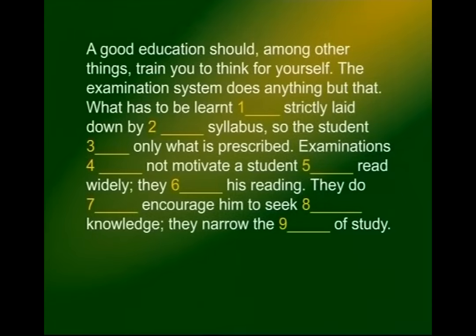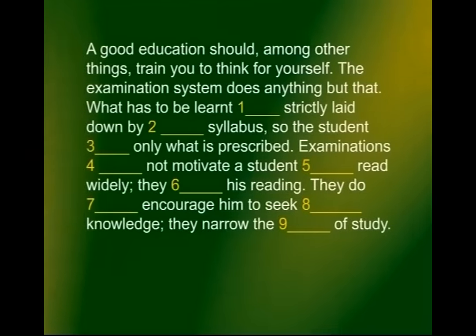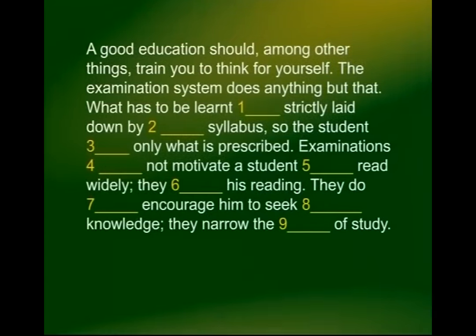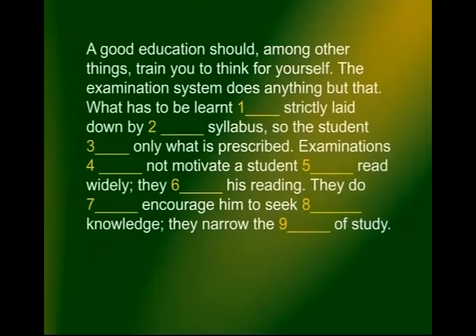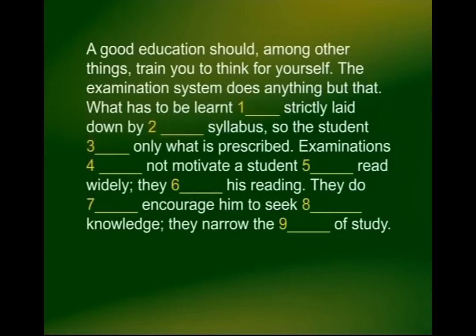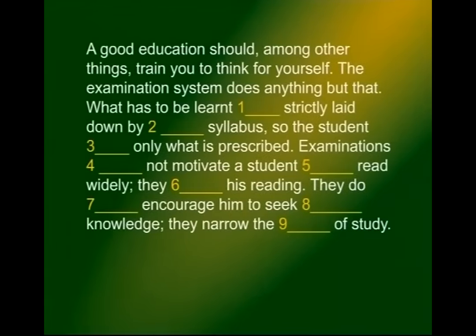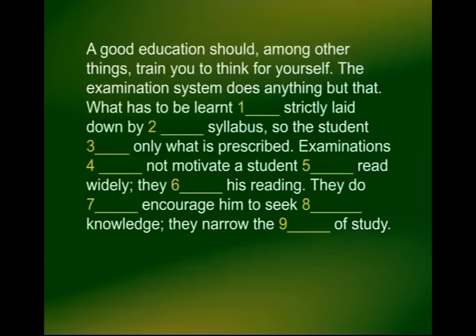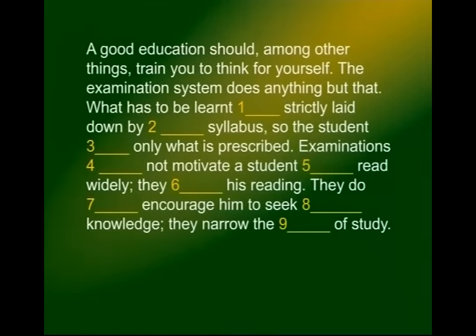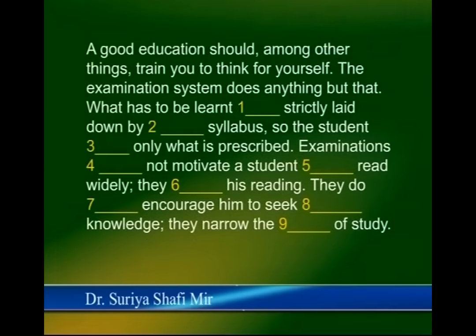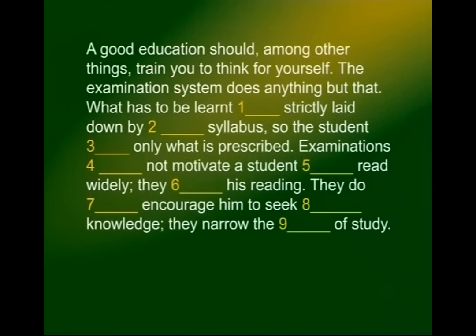The next sentence: 'Examinations — not — motivate a student to read widely. They — his reading.' The gap requires 'do' — examinations do not motivate students to read widely. And 'they' restrict, curb, or limit his reading. If you use the word 'restrict,' it would be correct. If you use the word 'curb,' that would be correct. Or a word like 'limit' would also be appropriate. What you have to see is: does the word fit into the context and is it not violating any grammatical rule?